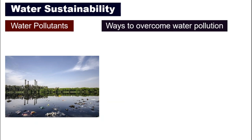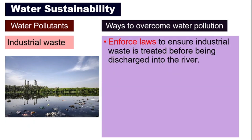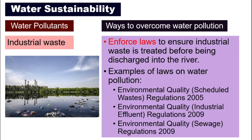The next water pollutants will be industrial waste, those coming out from factories. To overcome that, we can enforce laws to ensure that these factories will treat their waste before they discharge it into the water or the river. Here are a list of laws that exist.